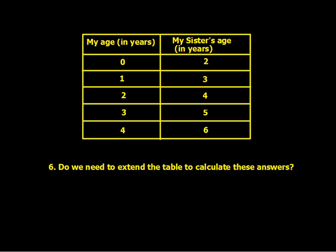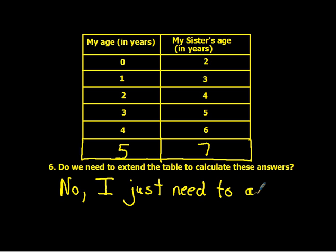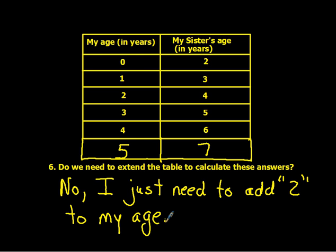Do we need to extend the table to calculate these answers? In other words, do we need to add on rows as we go up higher and higher? No — I just need to add two to my age to figure out my sister's age.